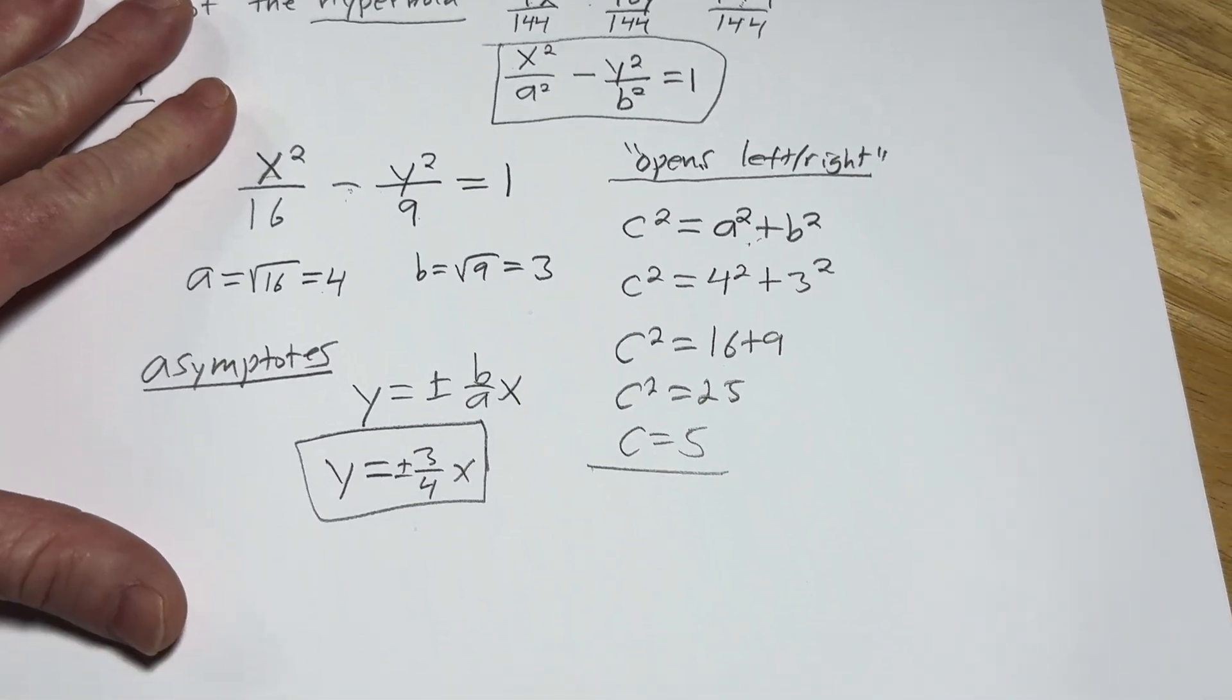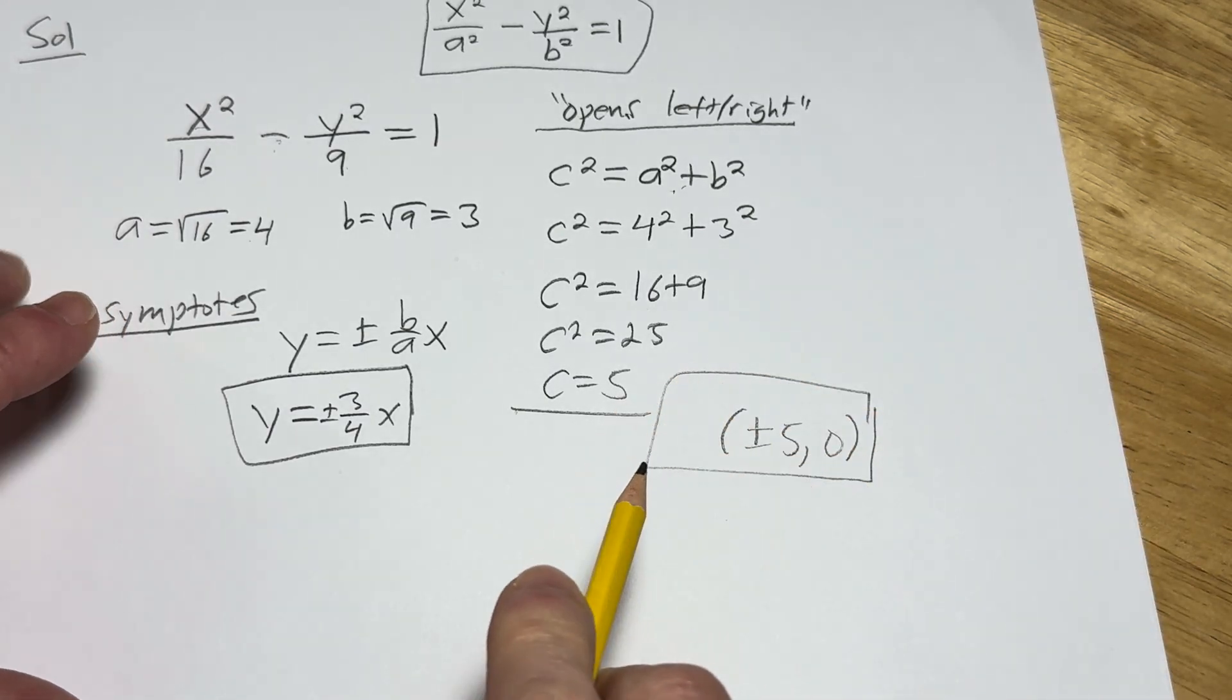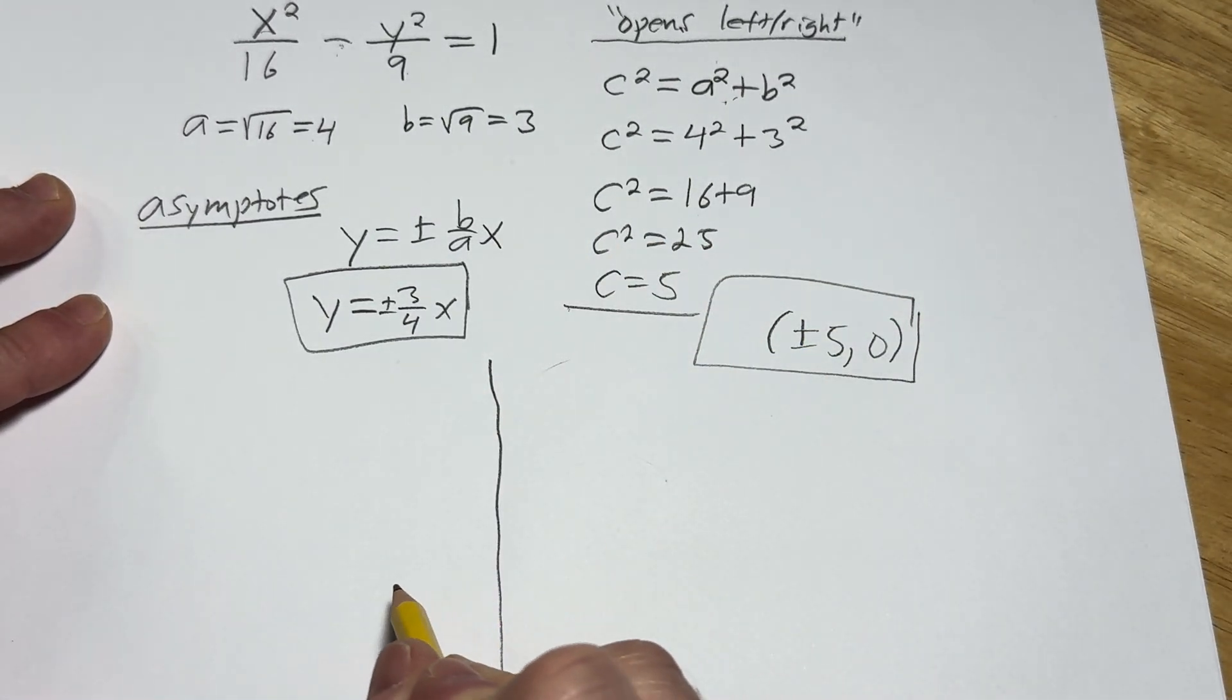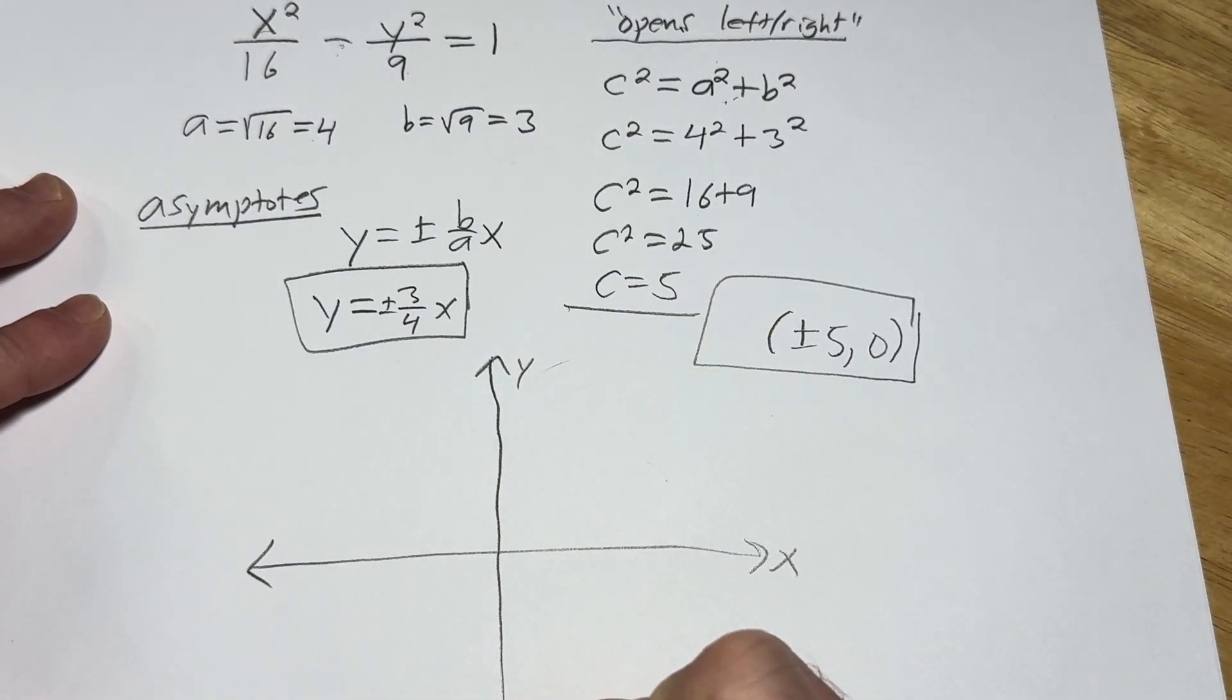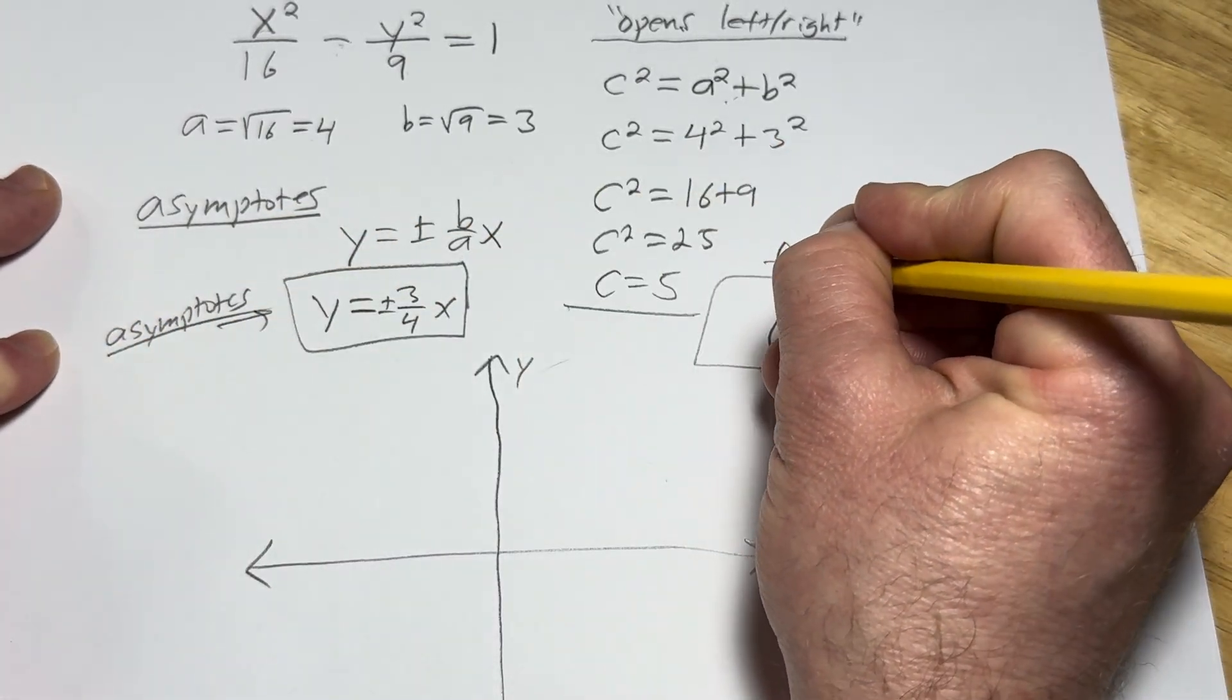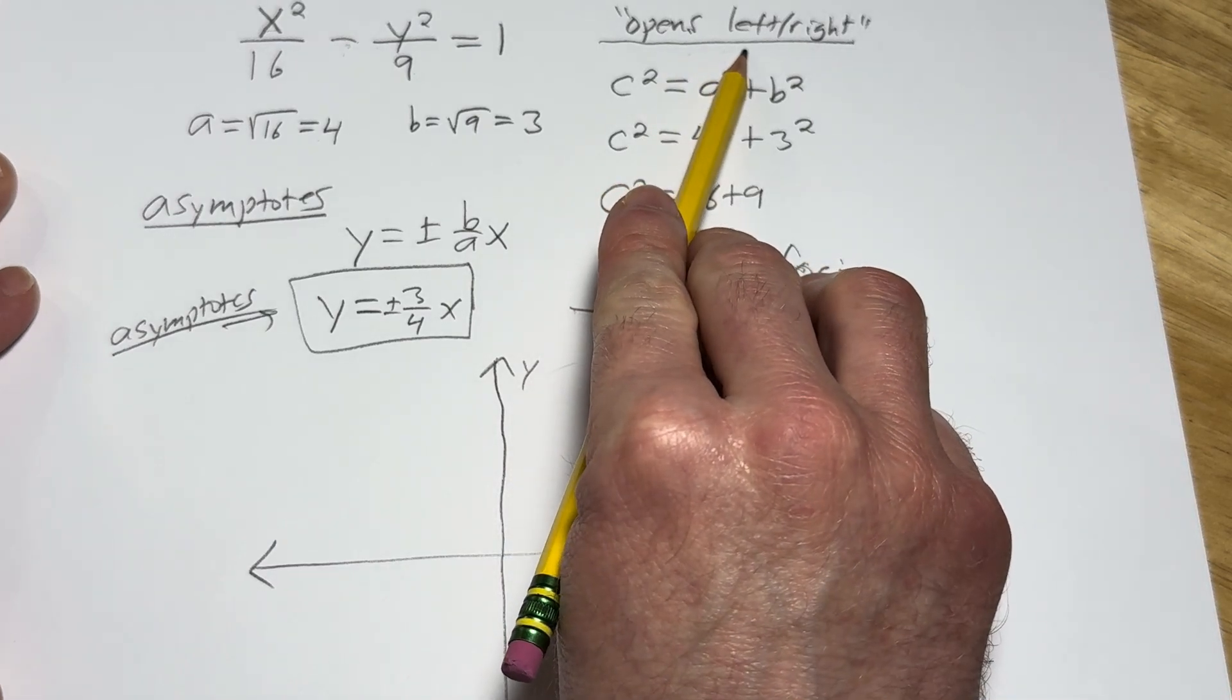Let's go ahead and write down the foci now. So the foci are going to be plus or minus 5 comma 0. You might say, how did you know that? It's because it opens left and right. Let's graph it, and I'll show you exactly what the foci look like on the graph. So here's the Y axis. Here's the X axis. We're going to come back to this. These are the asymptotes. I'm going to explain that again. Probably should have waited, but we're going to come back because sometimes the plus or minus 5 is here, right? And that's key. So it opens left and right. That's important.